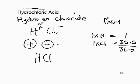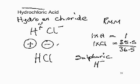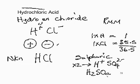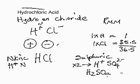Sulfuric acid can be called hydrogen sulfate — it's made up of H⁺ and SO₄²⁻. To balance, we take H⁺ times 2, giving H₂SO₄. Nitric acid can be called hydrogen nitrate — made up of H⁺ and NO₃⁻ (single minus). We need one of each, so the formula is HNO₃.